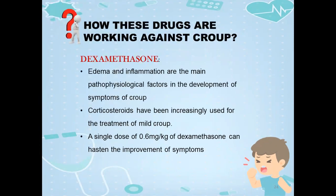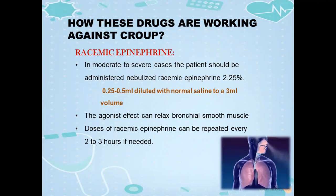How do these drugs work against croup? Regarding dexamethasone: edema and inflammation are the main pathophysiological factors in the development of croup symptoms. Corticosteroids have been increasingly used for the treatment of mild croup. A single dose of 0.6 mg per kg of dexamethasone can hasten the improvement of symptoms. Regarding racemic epinephrine: in moderate to severe cases, the patient should be administered nebulized racemic epinephrine 2.25% — that is 0.25 to 0.5 ml diluted with normal saline to a 3 ml volume. The agonist effect can relax bronchial smooth muscle. Doses of racemic epinephrine can be repeated every 2 to 3 hours if needed.